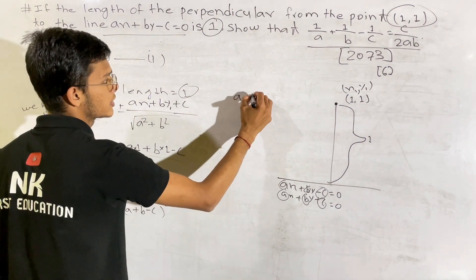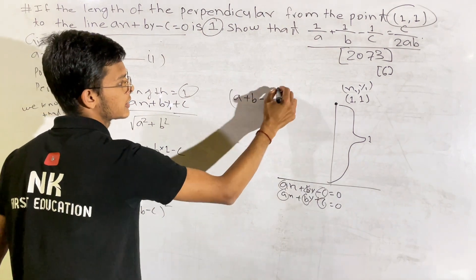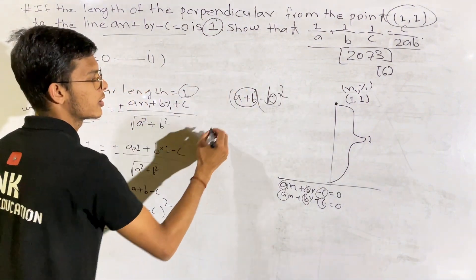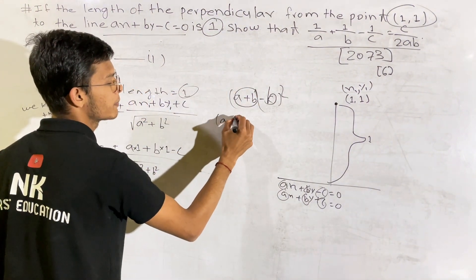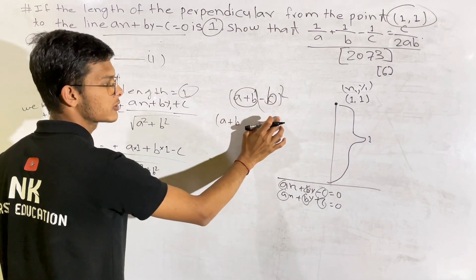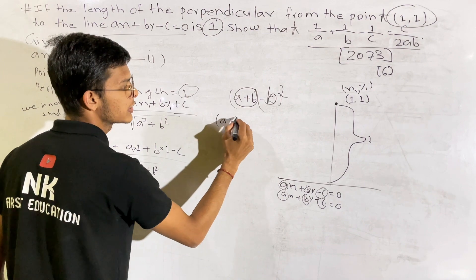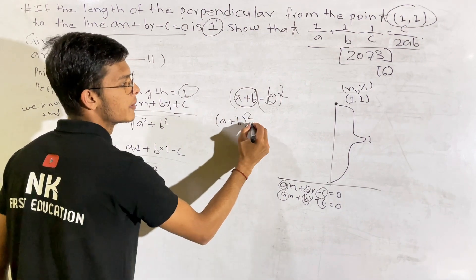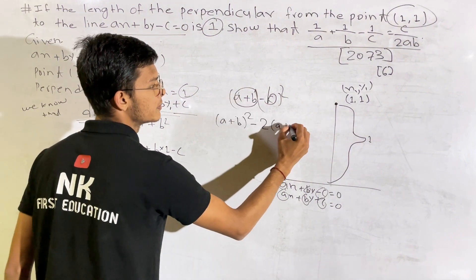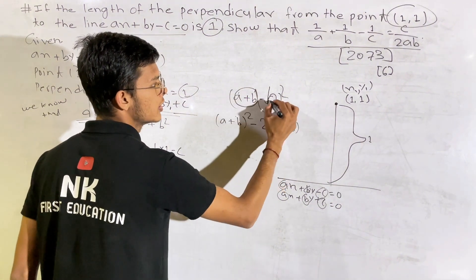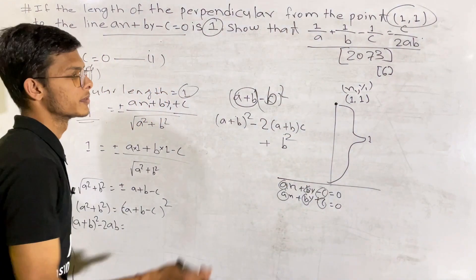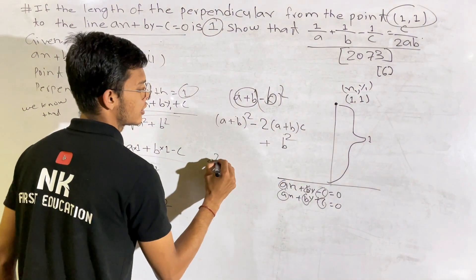Expanding: a plus b minus c squared gives a square plus b square, and a plus b to a square minus 2a plus a square minus 2.